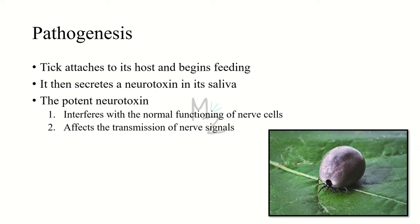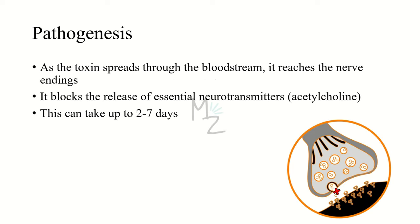Let's uncover the pathogenesis behind tick paralysis. The tick attaches to its host — the human being — and begins feeding. As you can see in this picture, the swollen tick has taken a lot of blood. It then secretes a neurotoxin in its saliva, a potent neurotoxin that interferes with the normal functioning of nerve cells and affects the transmission of nerve signals. After the tick bite, the toxin spreads throughout the bloodstream and reaches the nerve endings.